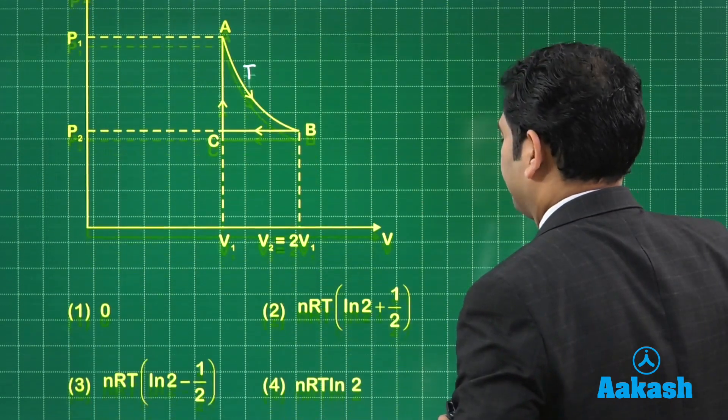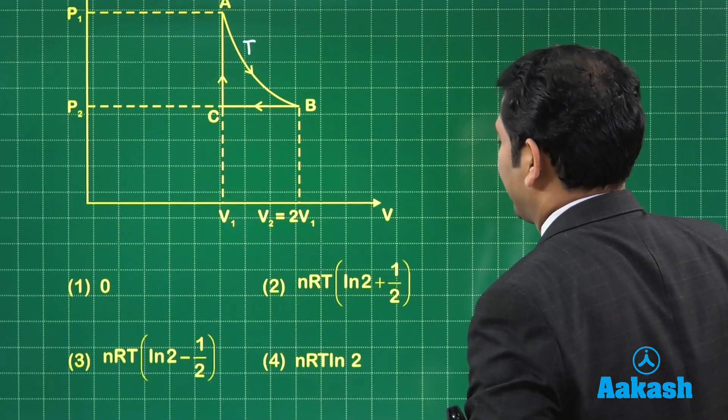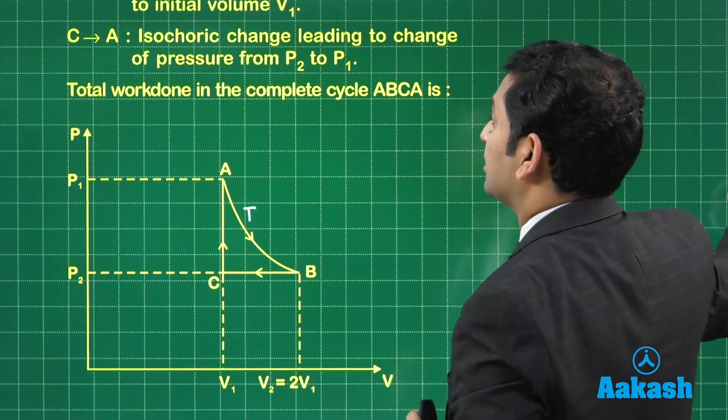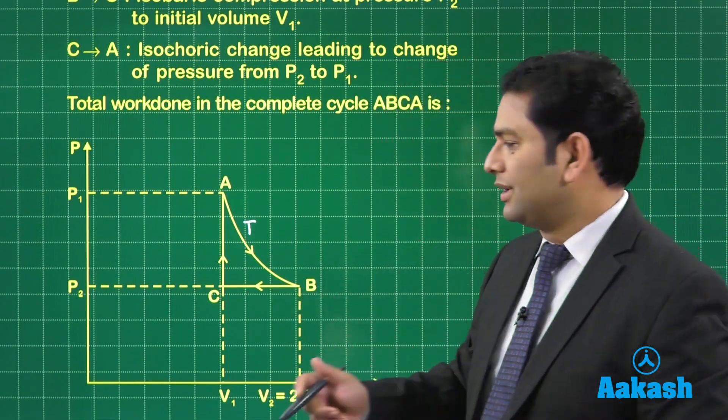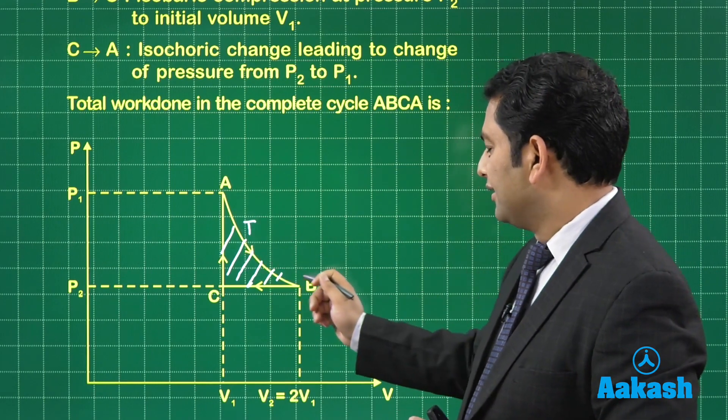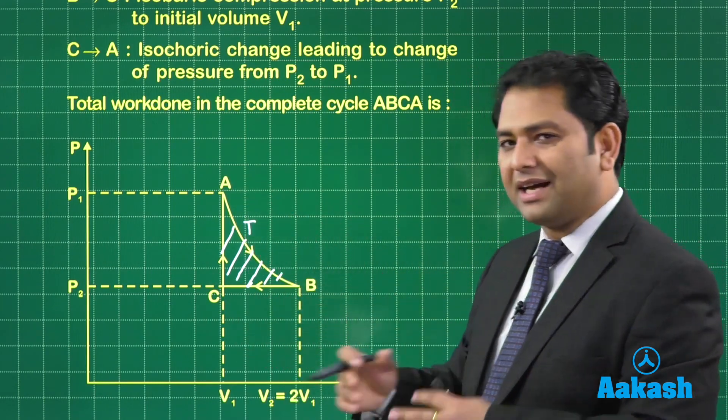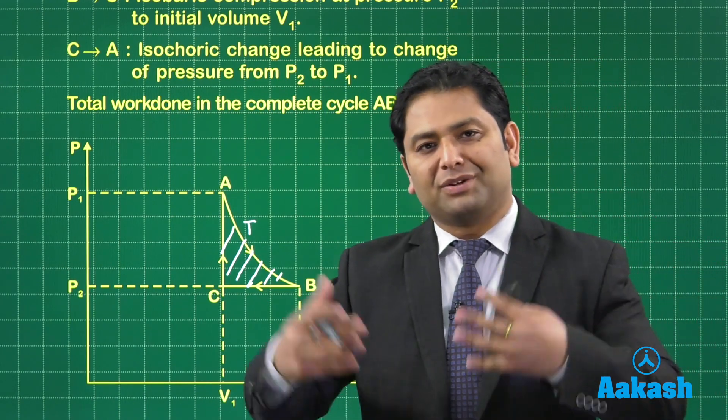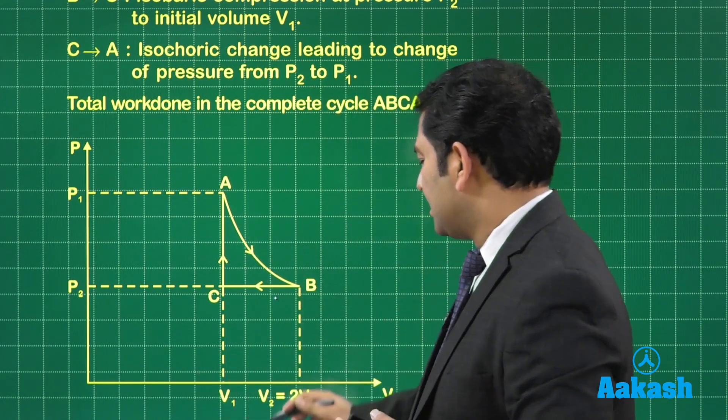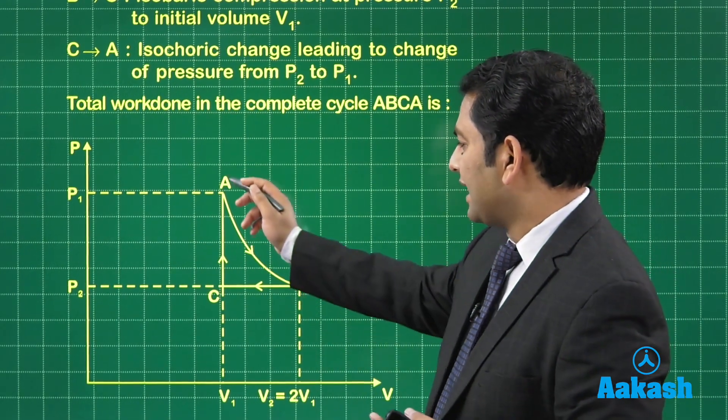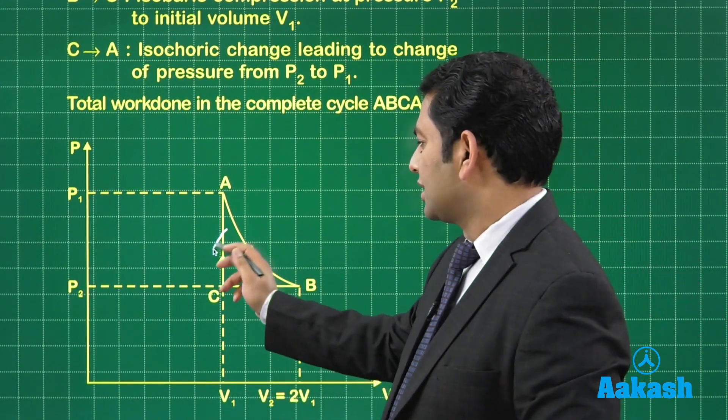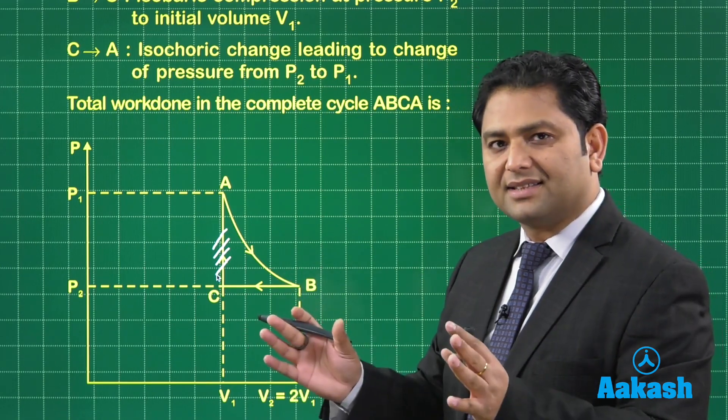I need to calculate the work done. Here are the options, we need to match with the given option. How do we calculate work done? In order to calculate the work done, we calculate the area enclosed by this cycle. But because this one is not linear, it's not feasible. We'll calculate individual work and then add them. There is a discount: work done in this process is zero because that's isochoric.